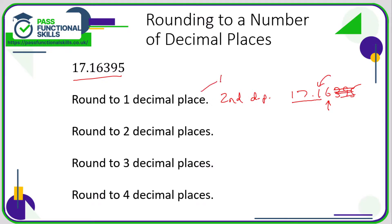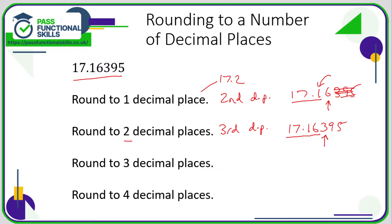So to one decimal place it rounds to 17.2. To two decimal places, we're interested in the value of the third decimal place. Whichever decimal place we're rounding to, we always look at the decimal place immediately to the right. The number is 17.16395, and we're interested in the third decimal place, which is the 3. Because this is less than five, we round down and leave it at 17.16.